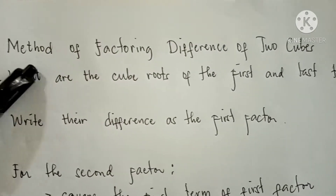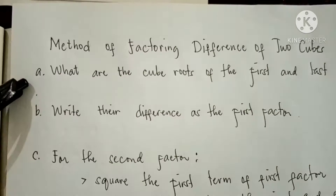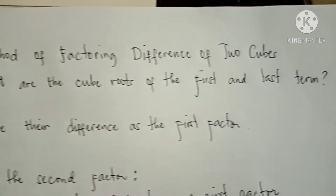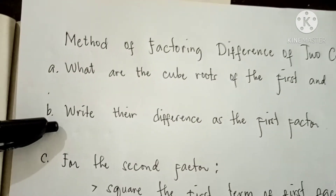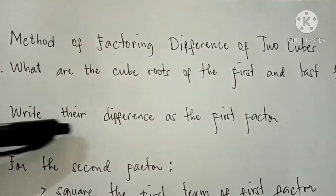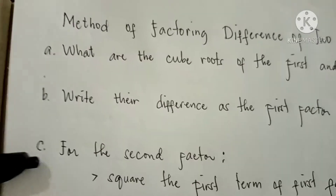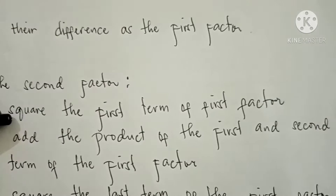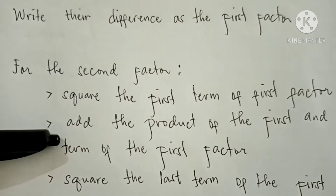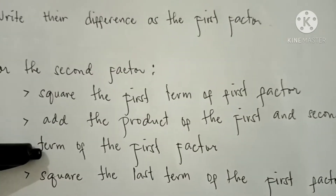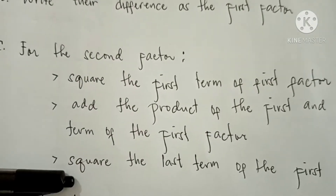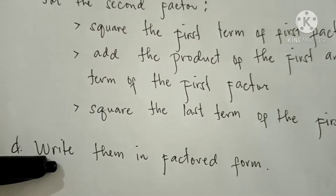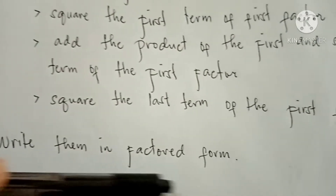Method of factoring difference of two cubes. First, what are the cube roots of the first and last term? Second, write their difference as the first factor. Third, for the second factor, square the first term of the first factor, add the product of the first and second term of the first factor, and square the last term of the first factor. Then lastly, write them in factored form.